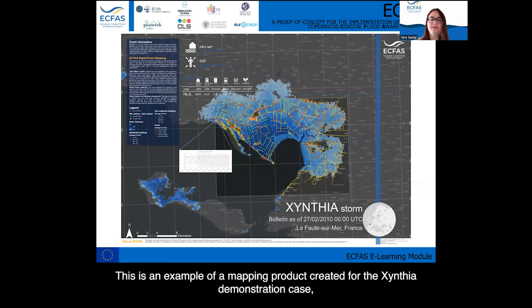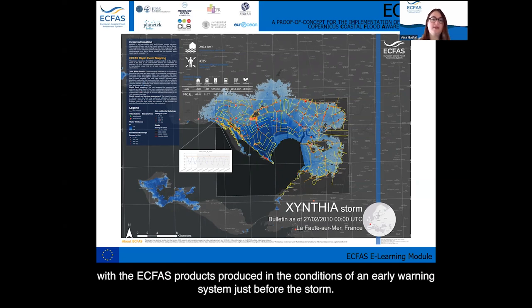This is an example of a mapping product created for the Xynthia demonstration case, with the ECFAS products produced in the conditions of an early warning system, just before the storm.